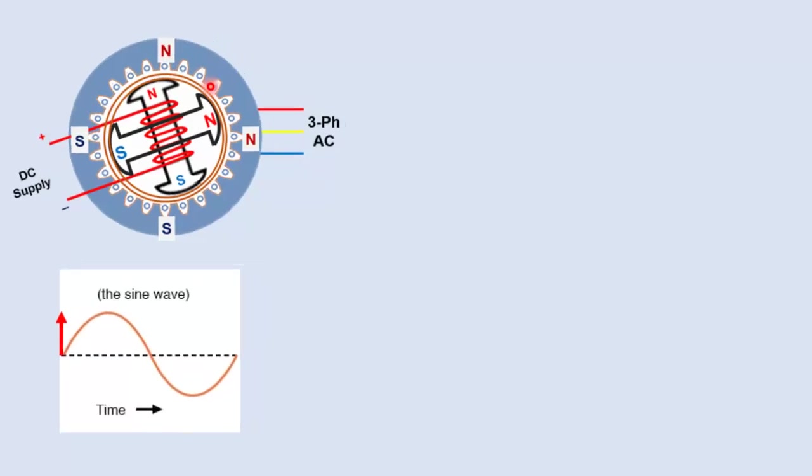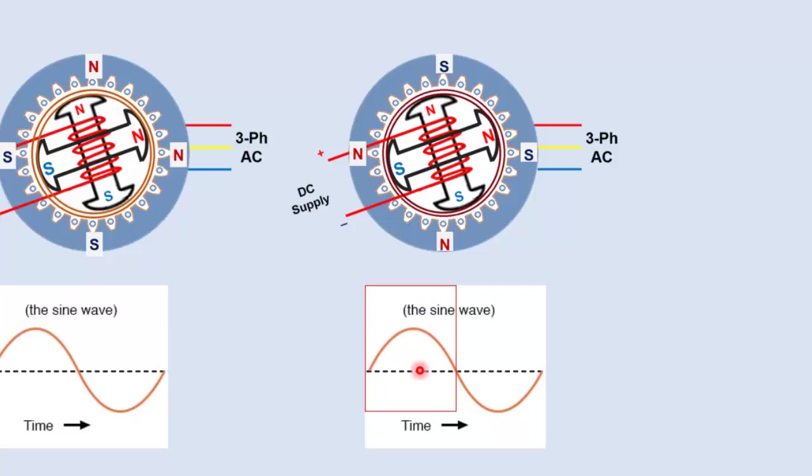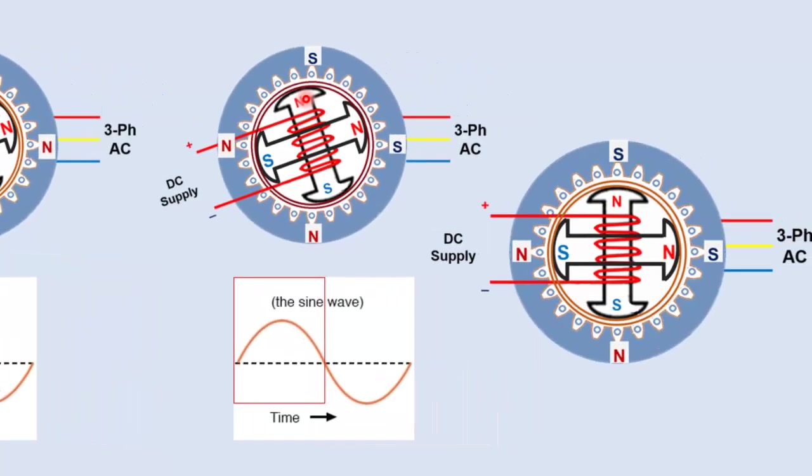Now during positive AC cycle, the stator changes its poles position and now south pole appears at the top. During positive cycle, the stator tries to attract the north pole of the rotor towards itself. At this instant, the opposite poles align with each other and motor rotates in the forward direction.